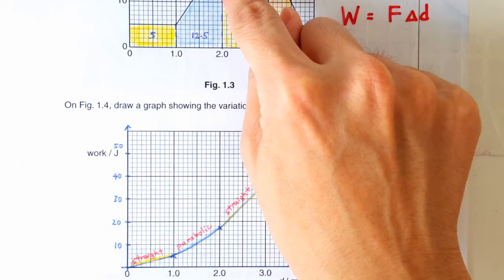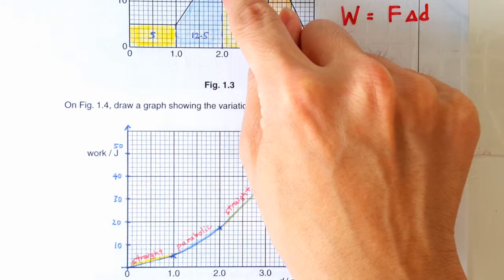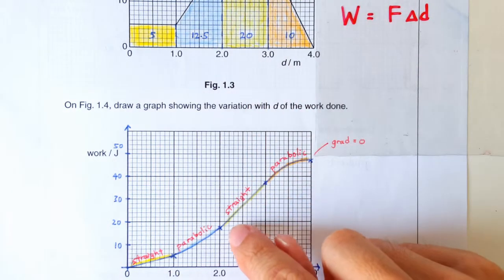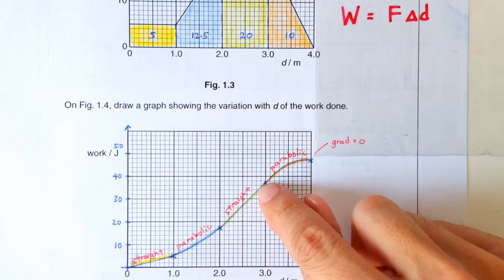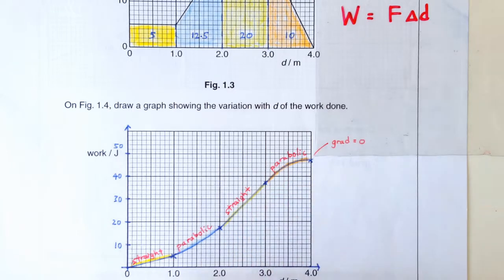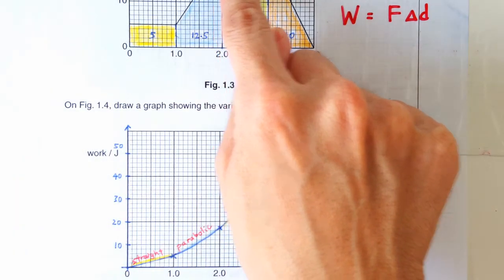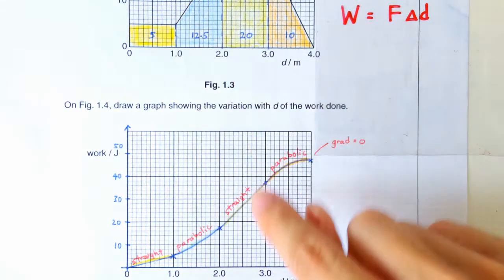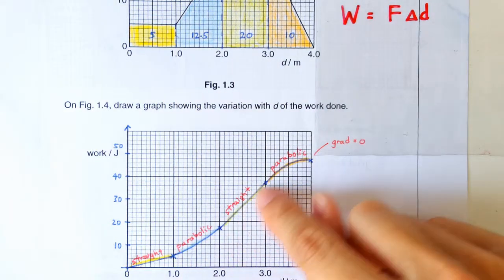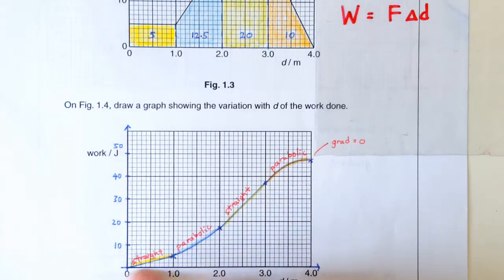Same here. Same here, you are doing work with a larger constant force. So it's a constant rate. So it's a straight line. Of course, this gradient is sharper than this gradient because you are doing work at a faster rate compared to here. But it's at a constant rate. That's why these two are straight line segments.